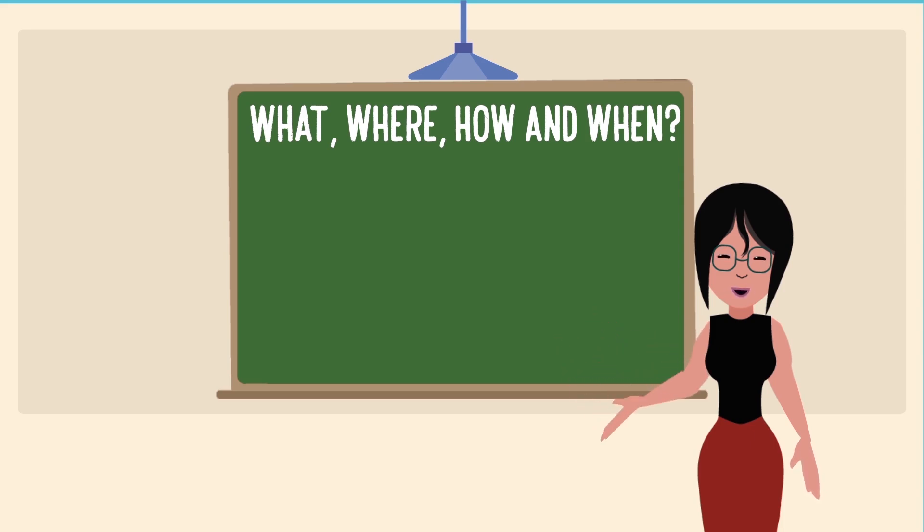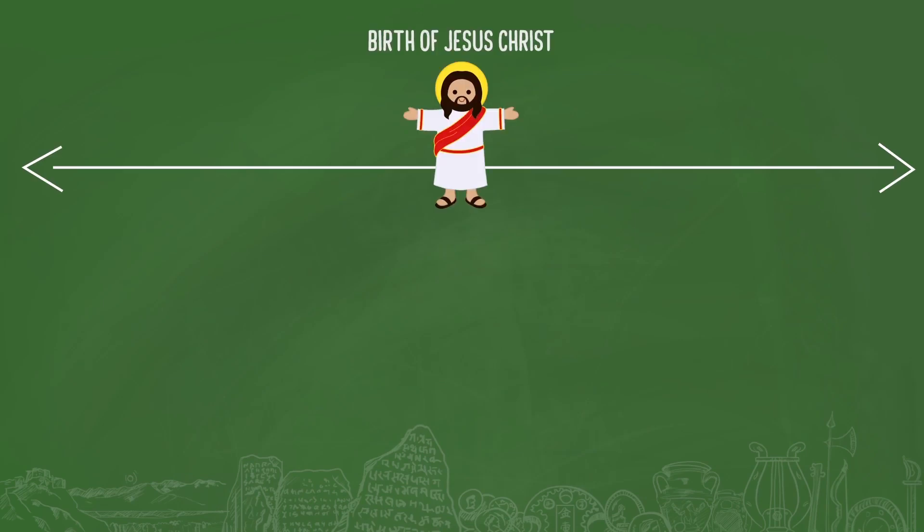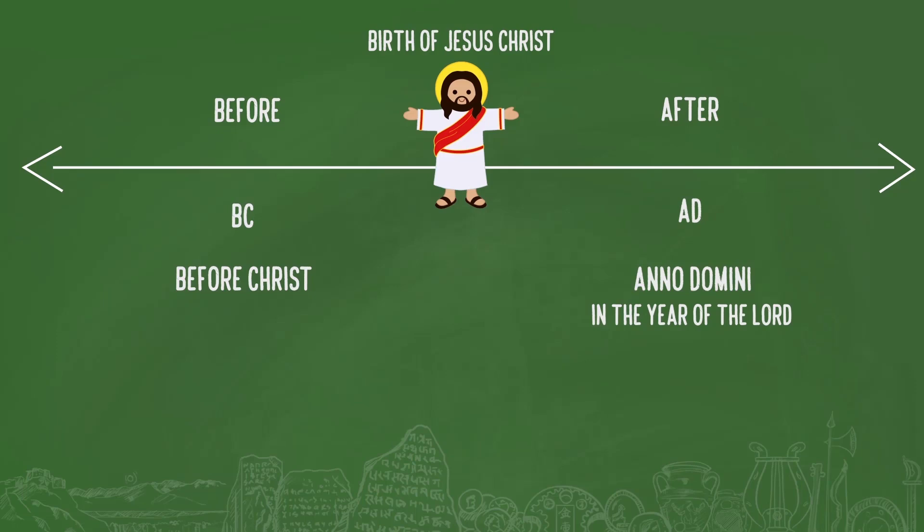If somebody asks you the date, you will probably mention the day, month and year 2000 something. This is counted from the date that is assigned to Jesus Christ's birth. So 2000 means 2000 years after the birth of Christ. All the dates before the birth of Christ are counted backwards and usually have the letter BC added to them. BC means Before Christ. Sometimes you will find AD before the date. AD stands for Anno Domini meaning in the year of the Lord, that is Christ. So 2005 can also be written as AD 2005.